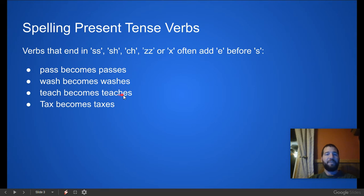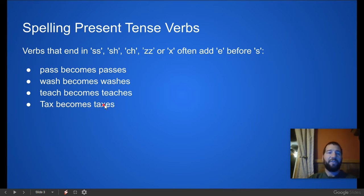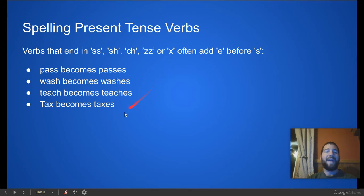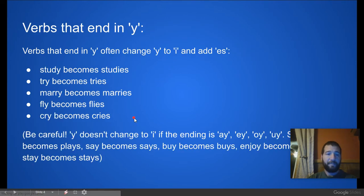'Teach' becomes 'teaches.' Without the E it would just be 'teachs,' which isn't right. And 'tax' becomes 'taxes.' So if we need to add an S onto a verb and it ends in S, SH, CH, ZZ, or X, we add an E before the S.